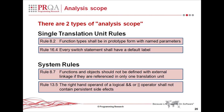Rule 13.5 — the right-hand operand of a logical AND or logical OR operator shall not contain persistent side effects — is a rule where, in order to do a proper analysis, if the right-hand operand contains function calls, we need to analyze the calling tree across functions and across translation units. So it becomes a more extensive piece of analysis. The distinction between a single translation unit rule and a system rule is quite significant both in terms of the challenge of doing the analysis and the time that may be taken.